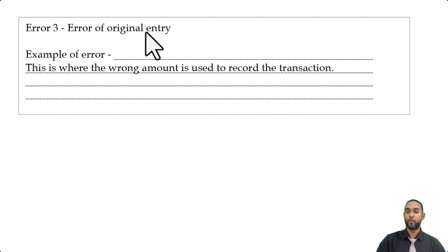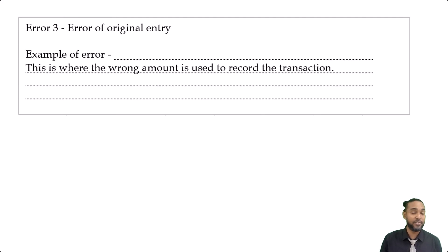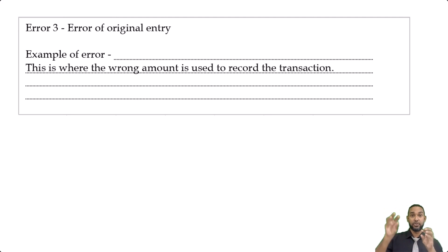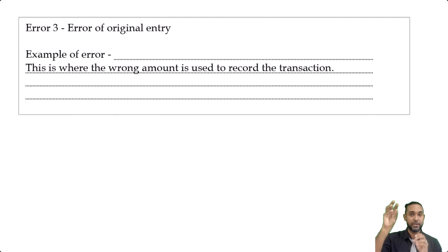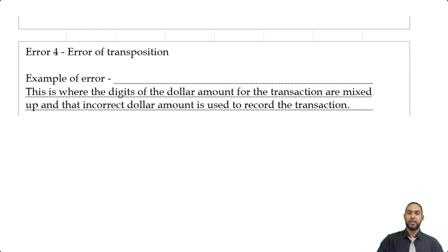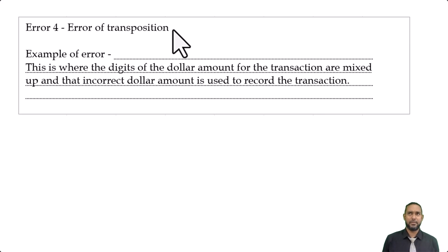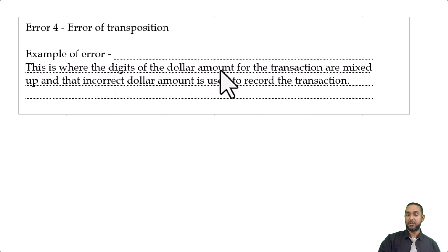Error of original entry: this is where the wrong amount is used to record the transaction. For example, if there was a transaction for $59 but you used $69, that's an error of original entry. Error of transposition — similar to error one in part A — is where the digits of the dollar amount are mixed up, such as $590 being recorded as $509, and that incorrect amount is used to record the transaction.